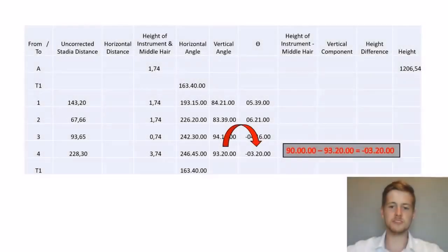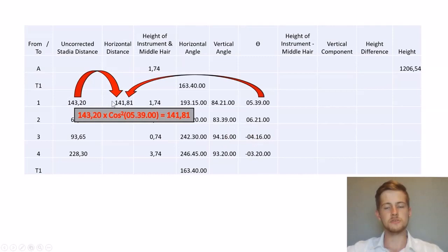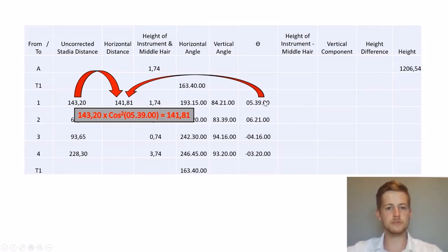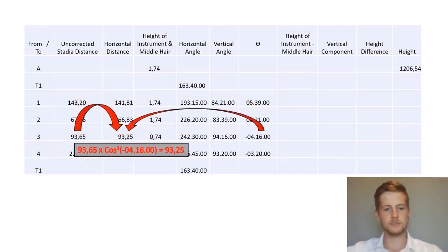To calculate our horizontal distance, we're going to be using our thetas. The calculation will be your uncorrected stadia distance times cos squared of your theta, which gives your horizontal distance. So it'll be this value times cos of this value squared, and we'll get 141.81. We do this for each of our points, using theta and the uncorrected stadia distance to work out the horizontal distance.